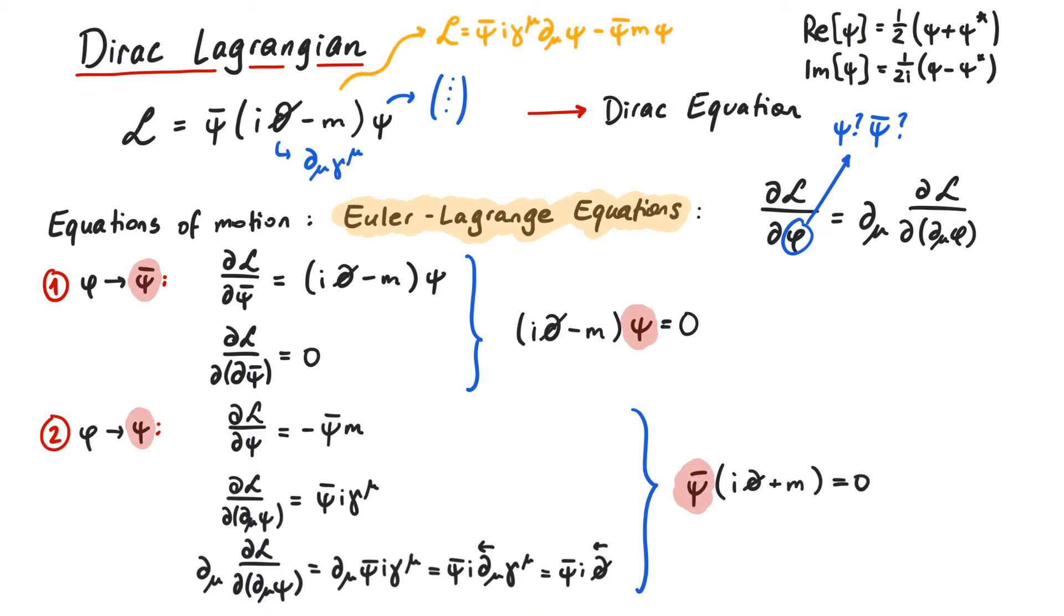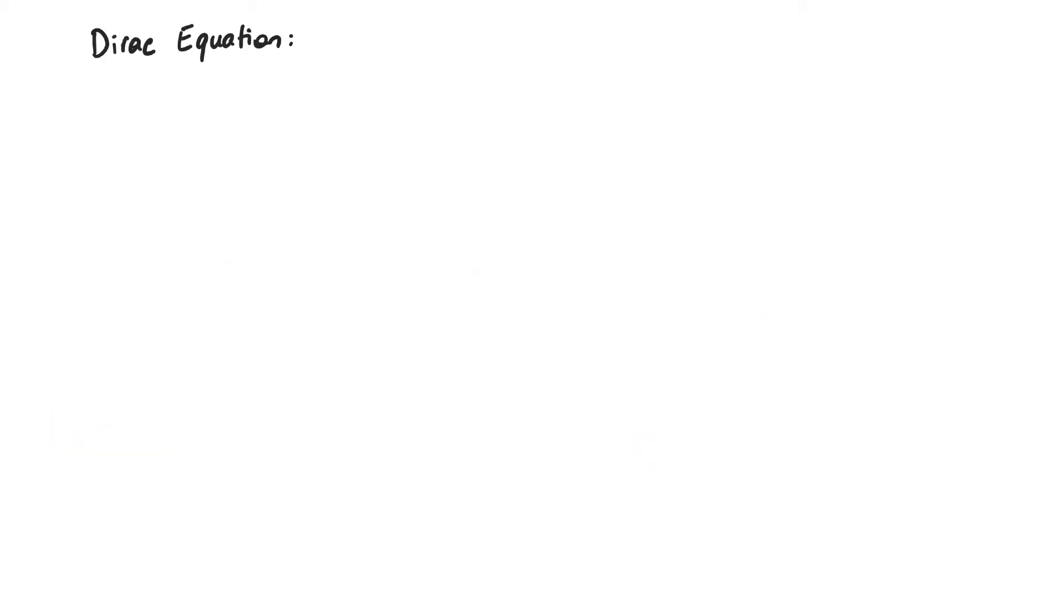To conclude this video, let's investigate how the two equations are related. We start with the Dirac equation for psi and apply a Hermitian conjugate. This reverses the terms and puts psi dagger to the left. The i gets a minus sign from the complex conjugation. And the derivative now has to act to the left, since psi moved.